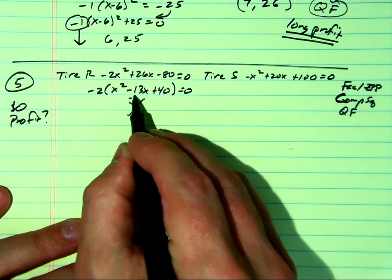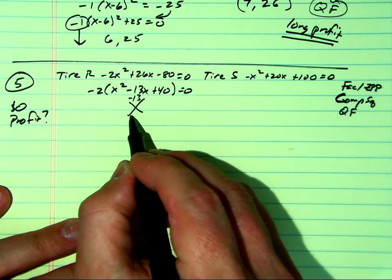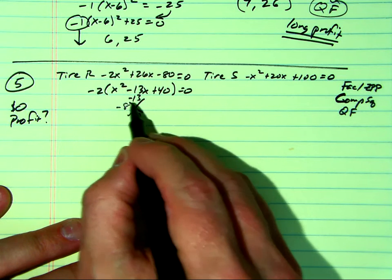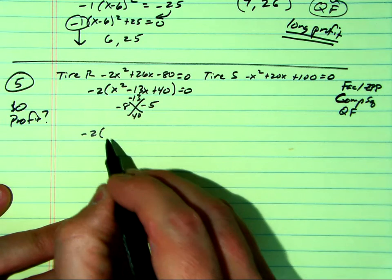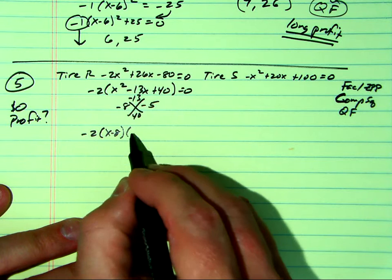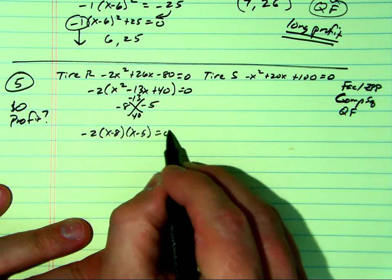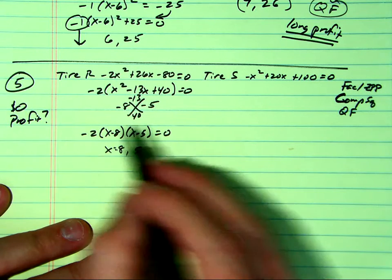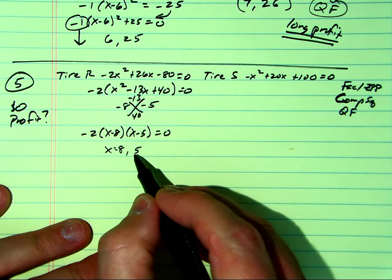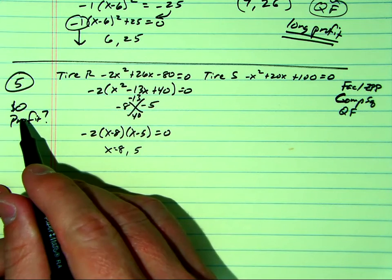What two numbers add up to negative 13 but multiply to 40? Isn't that minus 8 and minus 5? Oh, that's nice. So this factors very quickly into x minus 8 and x minus 5. Our solutions are at x equals 8 and 5. That's thousands of tires, that's when we're going to make zero profit.